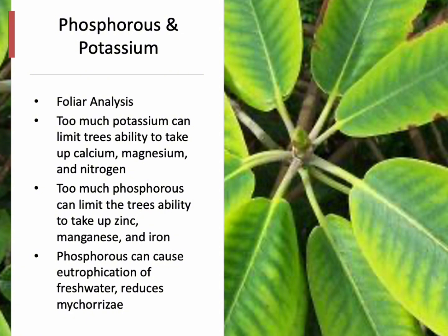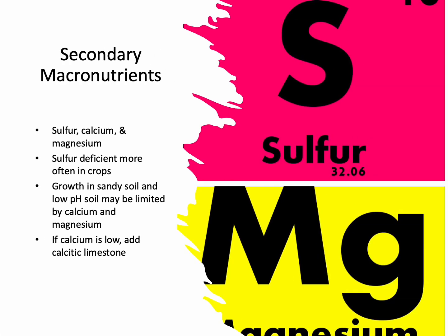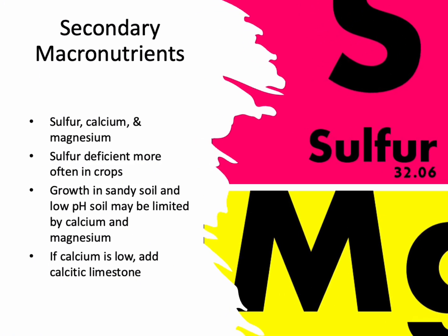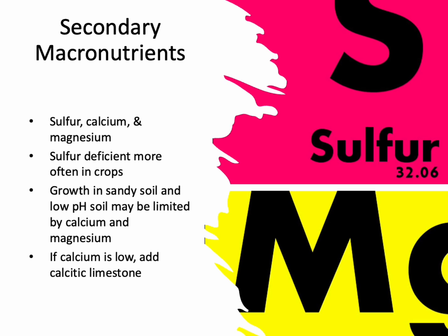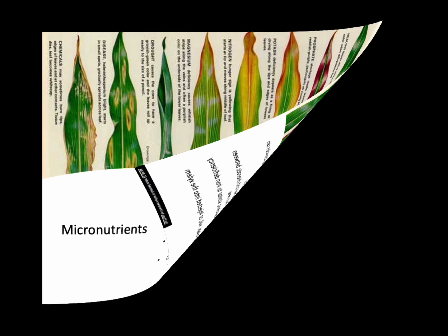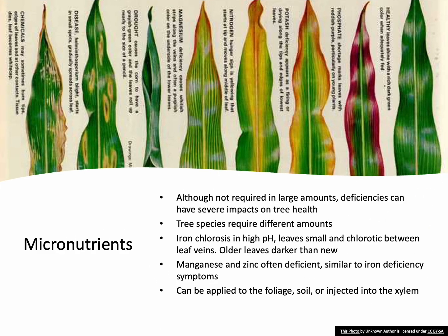Secondary macronutrients — sulfur, calcium, and magnesium — can also be deficient. Sulfur deficiency is more often found in crops than in landscape trees. Growth in sandy soil and low pH soil may be limited by calcium and magnesium; if calcium is low, add calcitic limestone. Micronutrient deficiencies, although these elements aren't required in large amounts, can have severe impacts on tree health. Iron chlorosis is common in high pH soils — you'll see it in pin oaks, with small chlorotic leaves between the veins and older leaves darker than new leaves. Manganese and zinc are often deficient, with symptoms similar to iron deficiency.